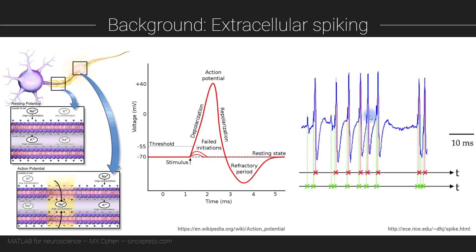Although these waveform shapes are different between different neurons depending on the properties of the neurons and the locations of the neurons relative to the recording electrode, usually neuroscientists are not interested in the waveform shape itself but instead are interested in the timing of the action potential. Therefore these kinds of continuous time series are often simplified to only record the timestamp of when the action potential occurred, like what you see here.